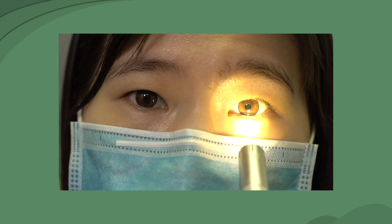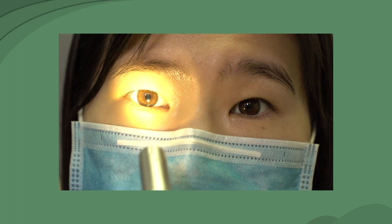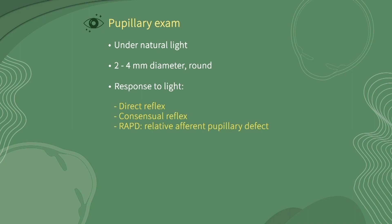Relative Afferent Pupillary Defect, RAPD, can be diagnosed by the swinging flashlight test. After shining a light on one pupil for 2 to 3 seconds, quickly move the light to the opposite pupil for 2 to 3 seconds, repeat 4 to 5 times. If the optic nerve conduction of one side is damaged, both pupils will dilate when the light is shining on the affected side.